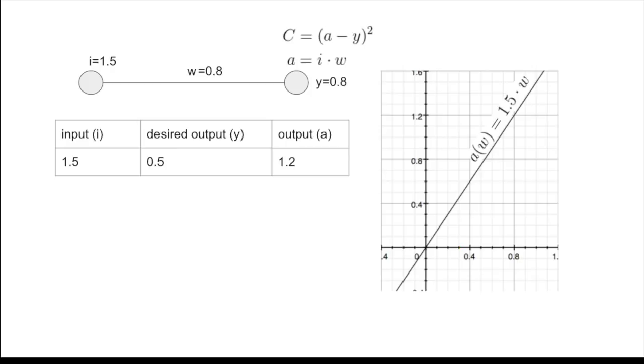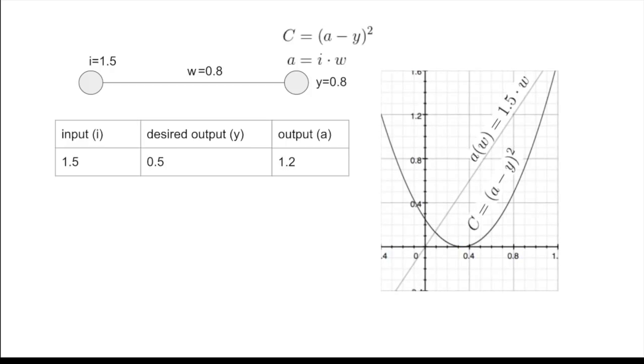Now, to formalize this desire of ours, we bring in the error function, which, when plotted, looks like a parabola. And you can clearly see that the minimum of this cost function is around here, which is what you would expect.